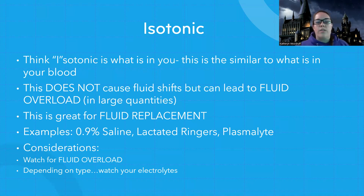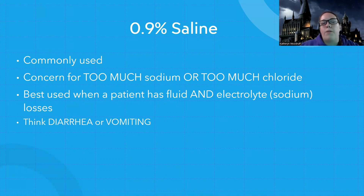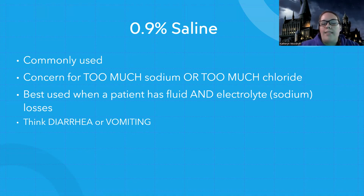You also want to consider electrolyte imbalances. With 0.9% saline — probably one of the most commonly used IV fluids — the sodium content is actually higher than normal, around 154 mEq/L versus the normal 135 to 145. So it can increase your sodium if you have too much. It also has chloride in it, so you can have hyperchloremia. This fluid is mostly used for patients that have both fluid and electrolyte — specifically sodium — losses, like diarrhea or vomiting, so that we're replacing both fluid and electrolytes.